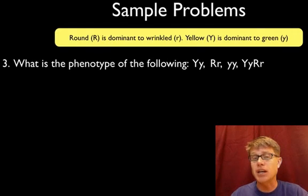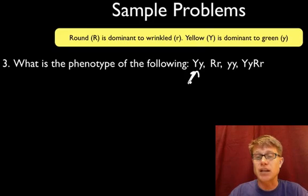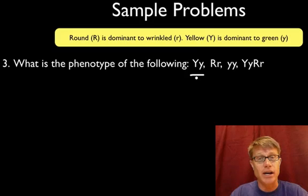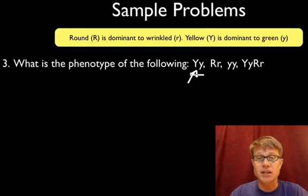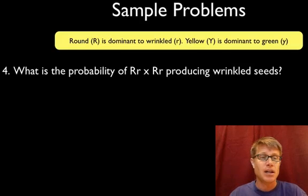Number three: what's the phenotype of the following? The genotype is the genes that you have — for example big Y, little y — and the phenotype is physically what you look like. So for big Y, little y: even though it's heterozygous, its phenotype would be yellow. The next would be round. The next would be green. And the last one would be yellow and round. Phenotype is physically what you look like.